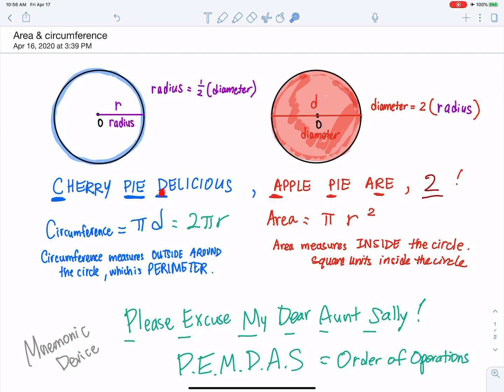Circumference equals pi times diameter. Area equals pi r squared. Cherry Pie Delicious Apple Pie R2. Circumference equals pi times diameter. Area equals pi r squared.